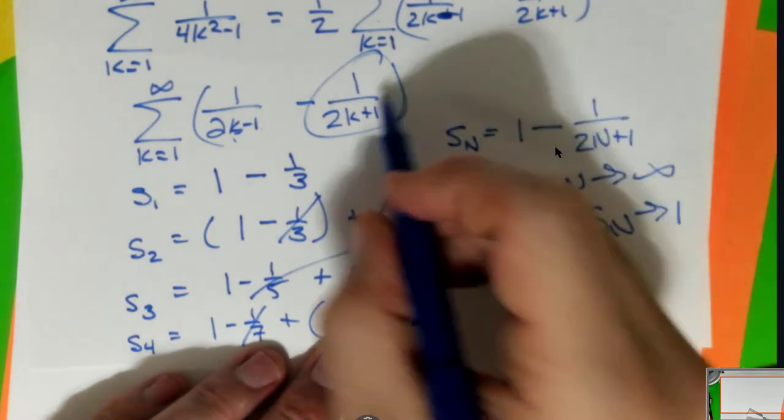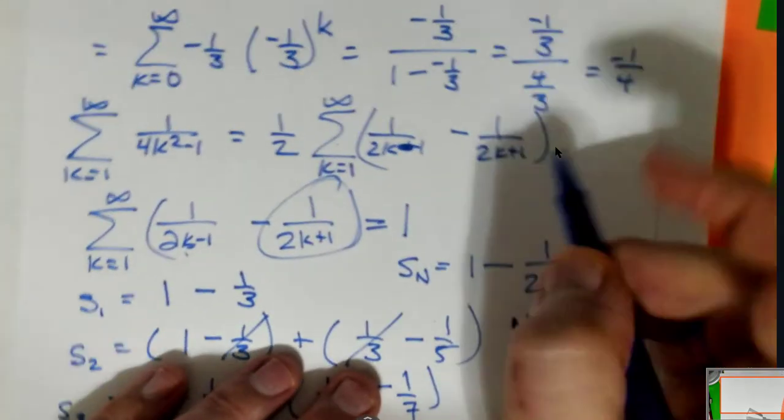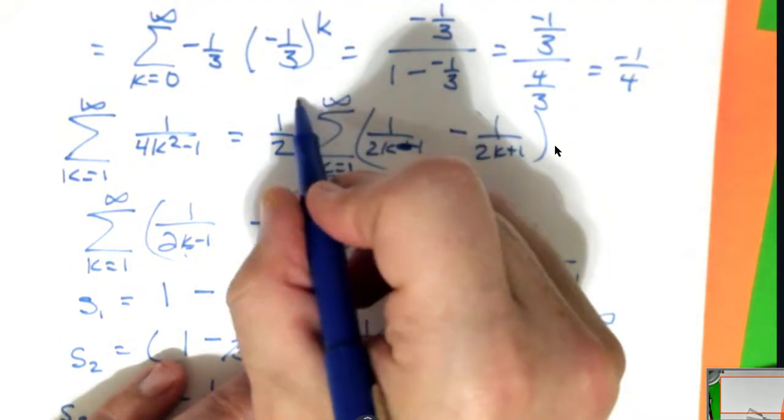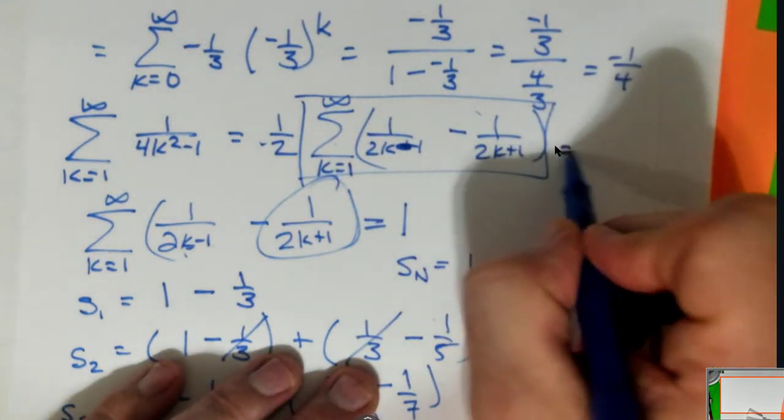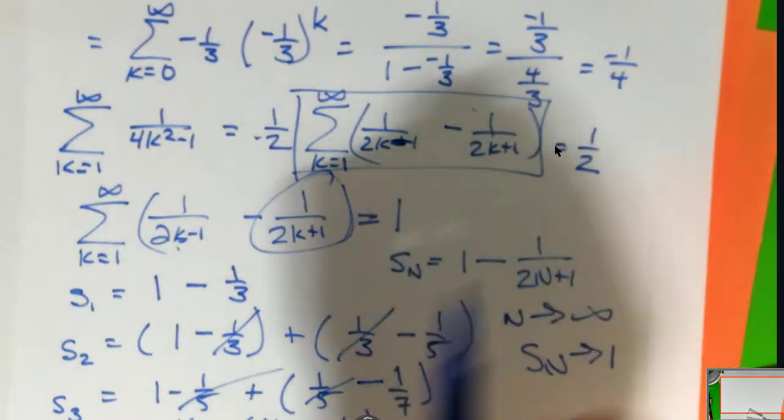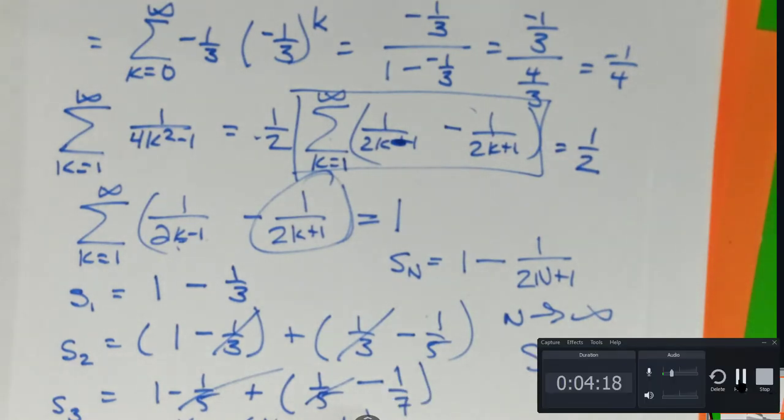Therefore, this series converges to one. However, this series up here, if this converges to one, don't forget to multiply it by a half. That converges to one half.